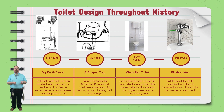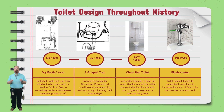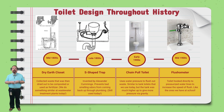Finally, in the mid-1900s, the flushometer was created, which avoids the whole tank system altogether and connects the toilet directly to pressurized water — just like the toilets we have in school today. As you can see, the engineering design process is an ongoing process, as a design can always be improved upon.